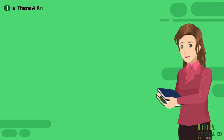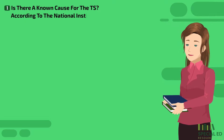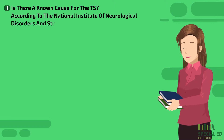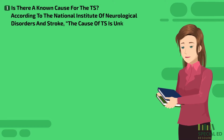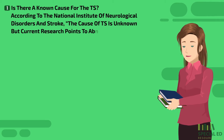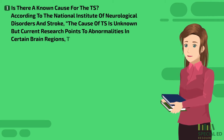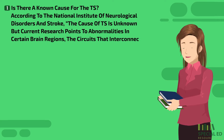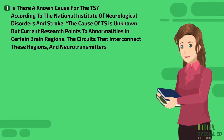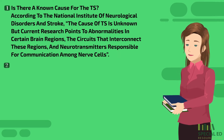Now let's go over some answers to common questions associated with Tourette syndrome. Number one: is there a known cause for TS? According to the National Institute of Neurological Disorders and Stroke, the cause of TS is unknown, but current research points to abnormalities in certain brain regions, the circuits that interconnect these regions, and neurotransmitters responsible for communication among nerve cells.